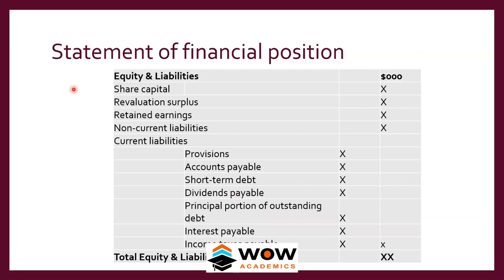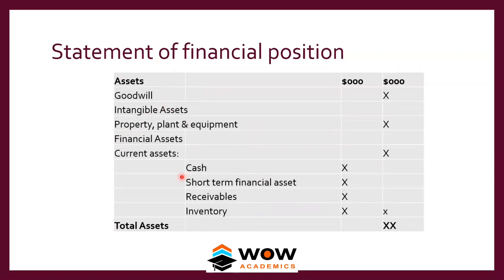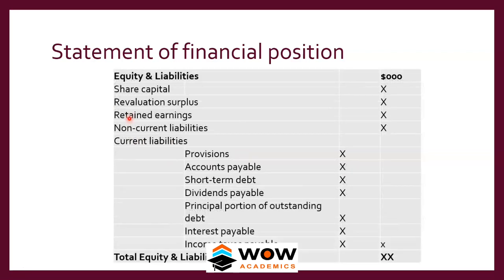The other side of the SOFP shows equity and liabilities. The asset side represents everything the company owns; the equity and liability side represents what the company owes to outside people. Shareholders' capital is also considered outside money and sits on the equity and liability side. Equity includes share capital, revaluation surplus, and retained earnings. Liabilities are divided into non-current liabilities and current liabilities.